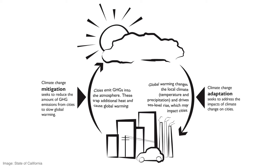To deal with the emission of greenhouse gases, which is causing the problem, we engage in what's called climate change mitigation. The objective is for communities to take actions to reduce greenhouse gas emissions. Looking at the right side of the diagram, responding to the impacts of climate change that local communities will feel, we can see that this is called climate change adaptation. The idea is to build more resilient communities that can deal with these potential impacts. So what is climate action planning?